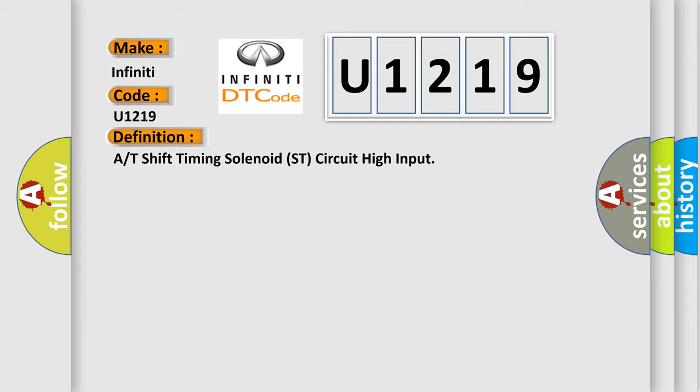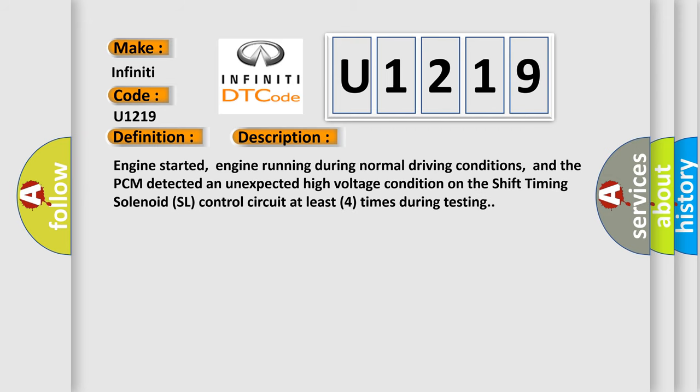And now this is a short description of this DTC code. Engine started, engine running during normal driving conditions, and the PCM detected an unexpected high voltage condition on the shift timing solenoid SL control circuit at least four times during testing.